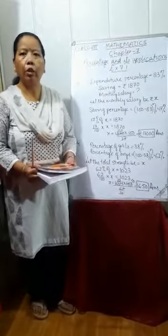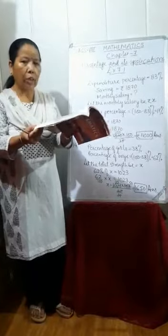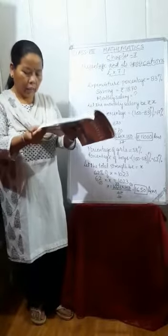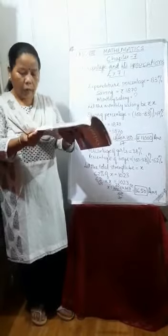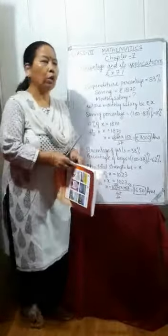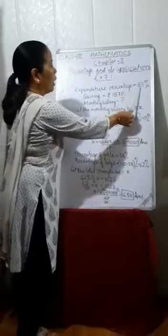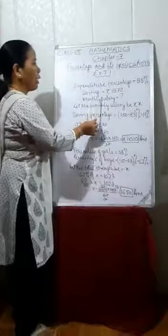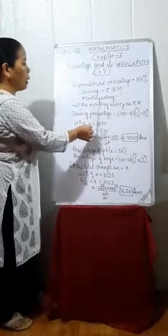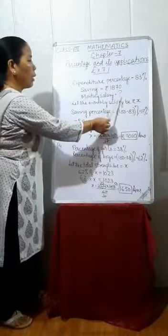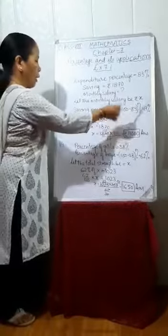See question number 13 in your book. The question says Mr. Khanna spent 83% of his salary and saved Rs. 1870. Calculate his monthly salary. According to the question, expenditure percentage is 83% and saving is Rs. 1870. We have to find out the monthly salary of Mr. Khanna. Let the monthly salary be Rs. X.